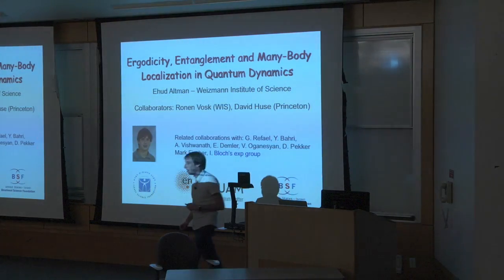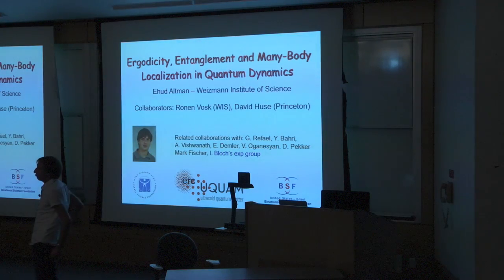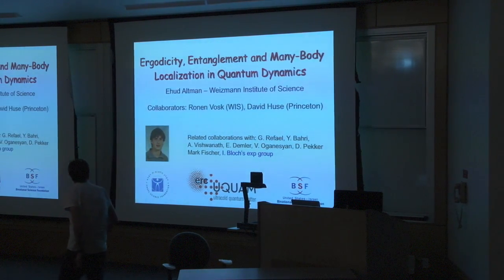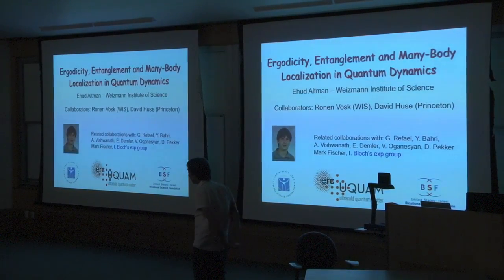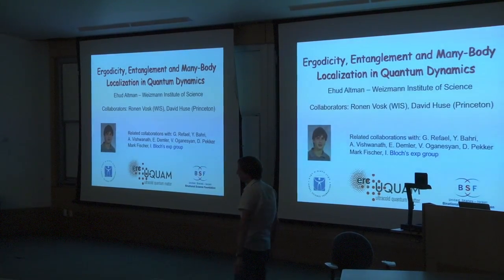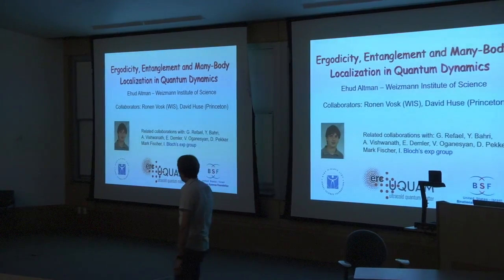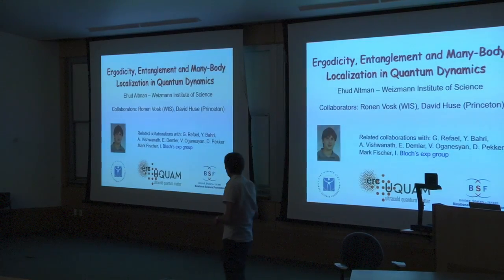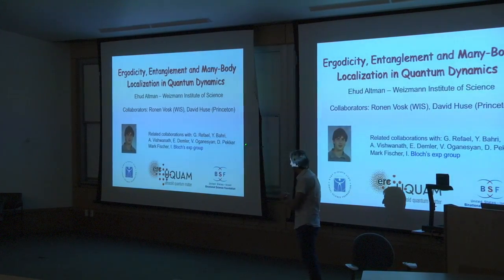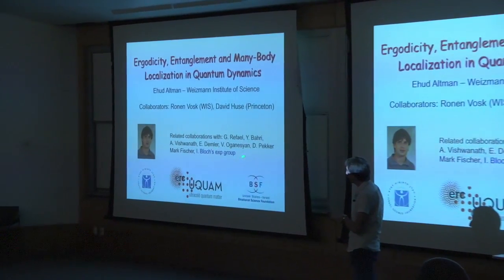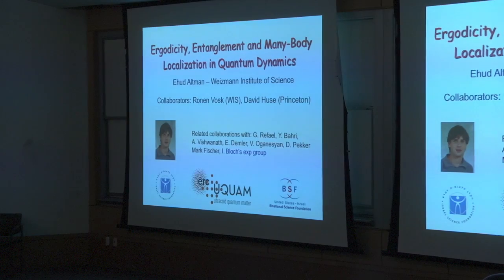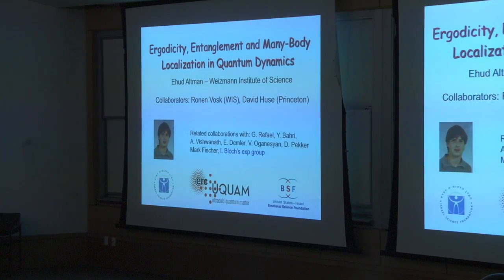Except for the wrong affiliation, the title is correct. Now I'm in Berkeley, and I'm really happy to be here again. It's a long time since I visited Southern California. I want to talk about work done mainly with my graduate student at Weizmann, Ronan Vosk, who unfortunately went to do algorithms for finance. There are also things done with David Hughes in Princeton. I'll talk about an experiment done in Emmanuel Bloch's group that we collaborated with, and I'll show some new results not yet published towards the end.